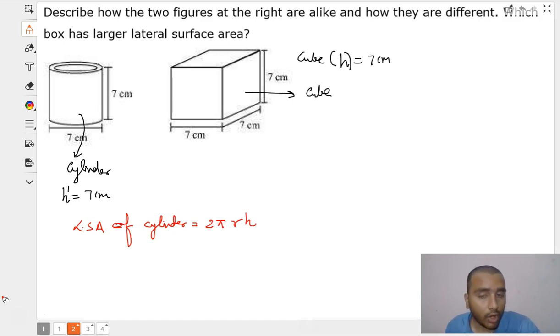Now, we know the value of H. What is the value of R of cylinder? So, radius is going to be 7 by 2. So we can simply put it in the formula. We can get the answer 2 multiplied by 22 by 7